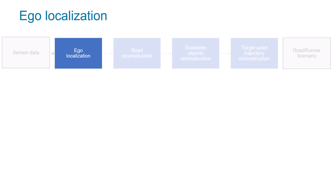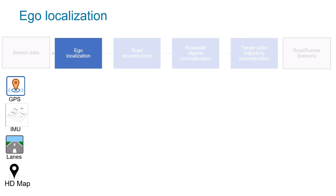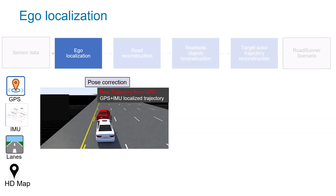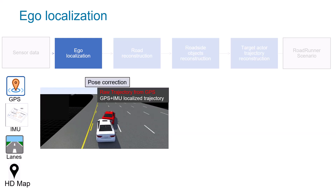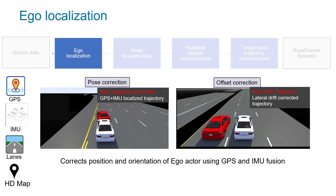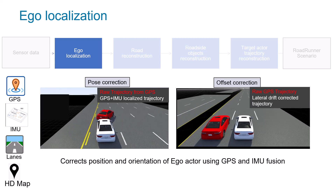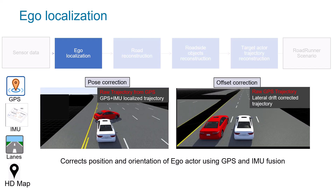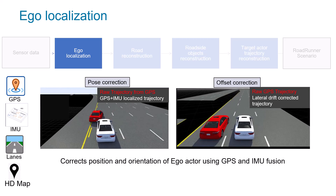Ego localization ensures precise localization of the ego vehicle using GPS data. We can also fuse GPS with IMU to improve the drift in the orientation of the ego vehicle. Additionally, leveraging lane information, we can correct multi-lane drift caused by bias in GPS readings.